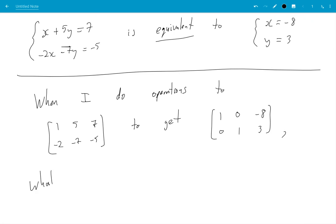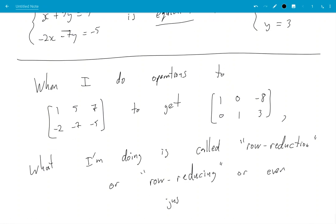What I'm doing is called row reducing, row reduction, or row reducing or even just reducing. Okay, you're reducing a matrix, so you're taking a matrix and reducing it to a more useful form.